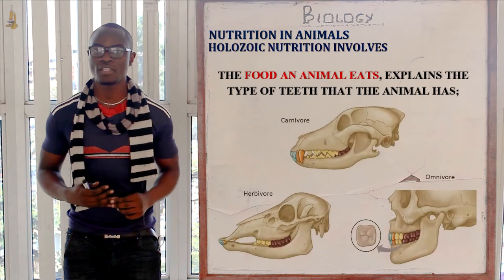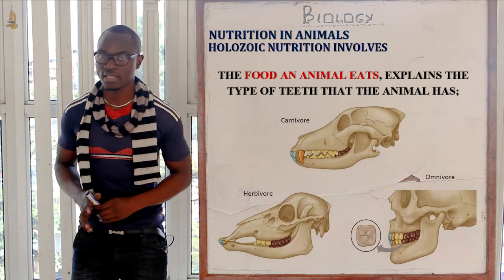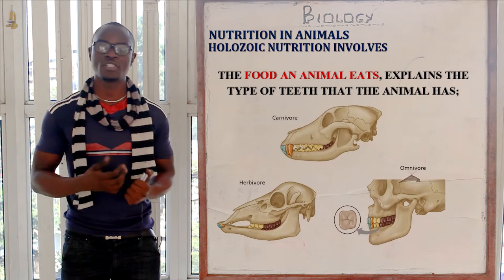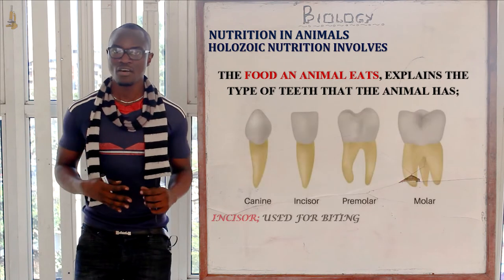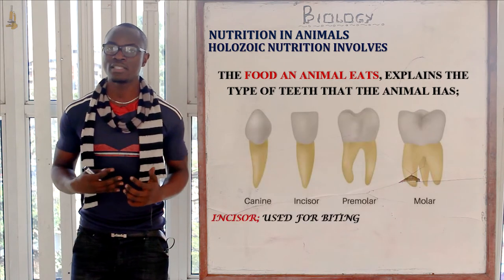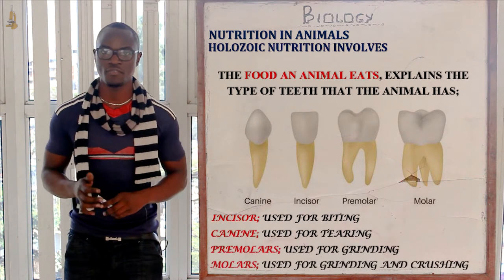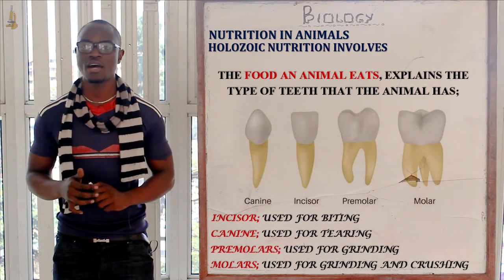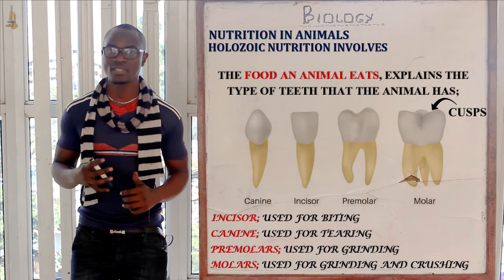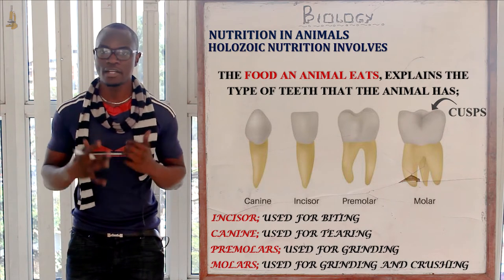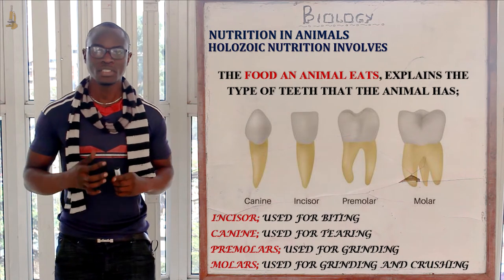The food that an animal feeds on dictates the type of teeth the organism will have. The types of teeth for mammals include incisors, used for biting; canines, used for tearing flesh; and premolars and molars, which have cusps and are used for crushing and grinding the food.